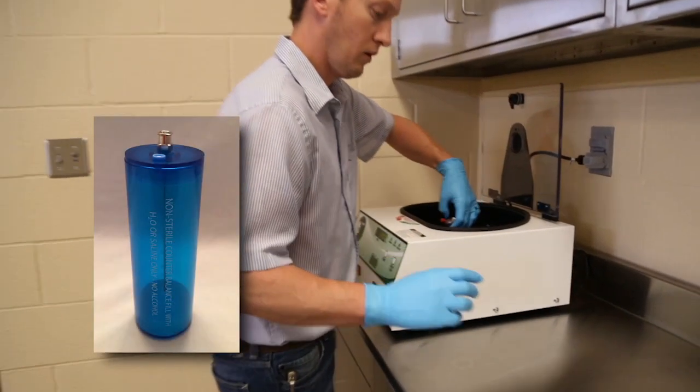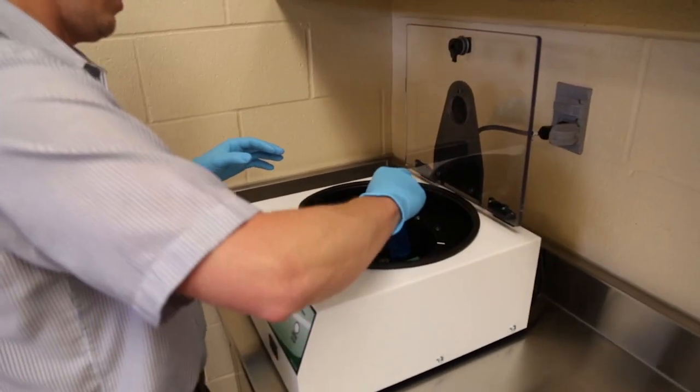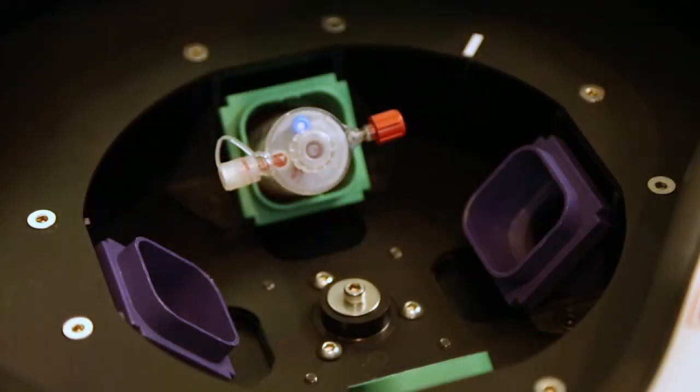Make sure to load the device with the ports placed horizontal, facing left and right, and not vertical. The green centrifuge buckets must be used with ProStride. It is critical that the centrifuge is balanced.